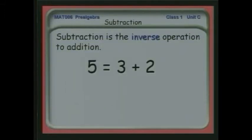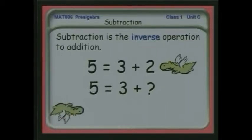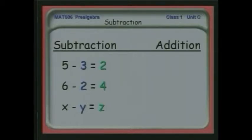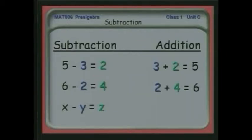Subtraction is the inverse property of addition. So if five is three plus two, then the inverse is five minus three equals two. Let's look at another example: if five minus three is equal to two, then the inverse is three plus two is five. If six minus two is four, the inverse is two plus four is six. And if x minus y equals z, then the inverse is y plus z equals x.